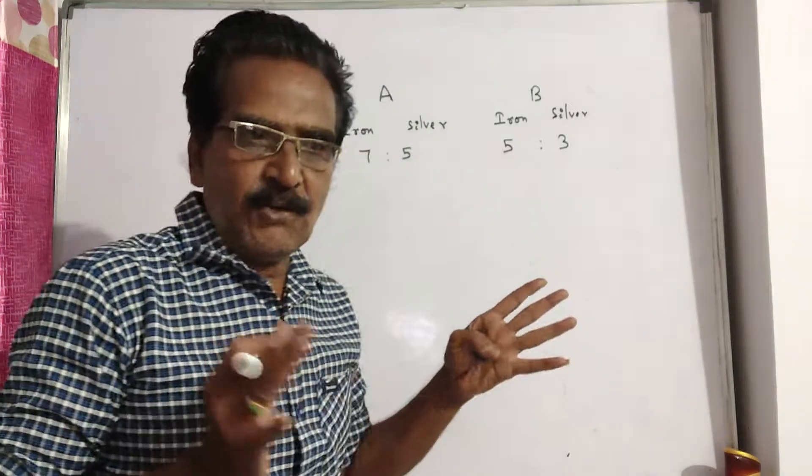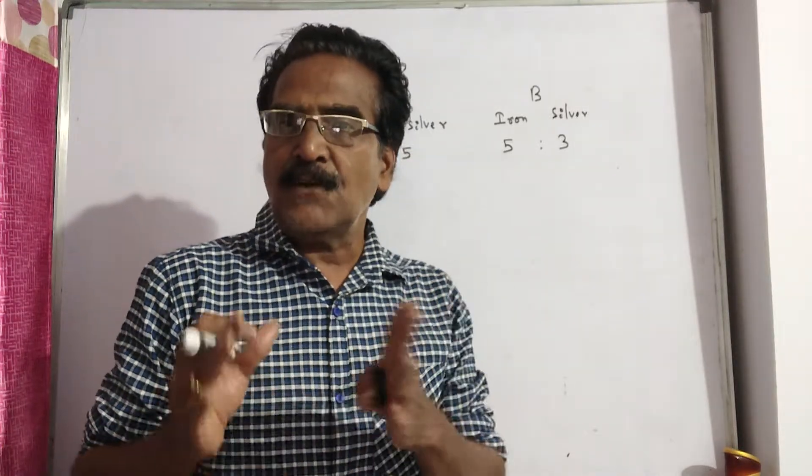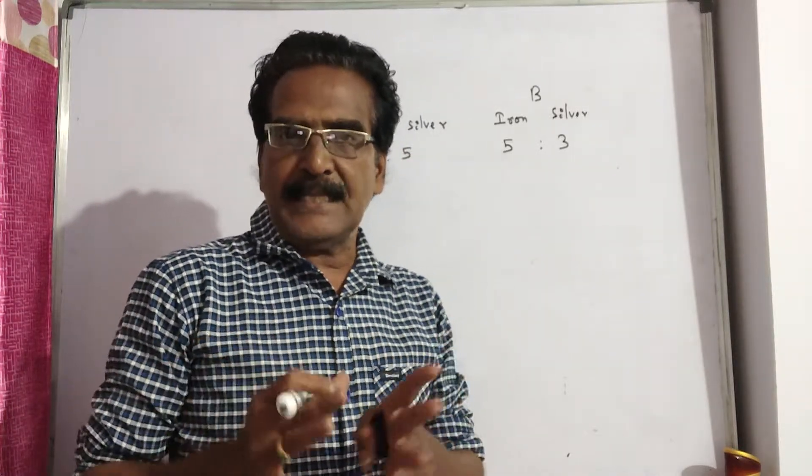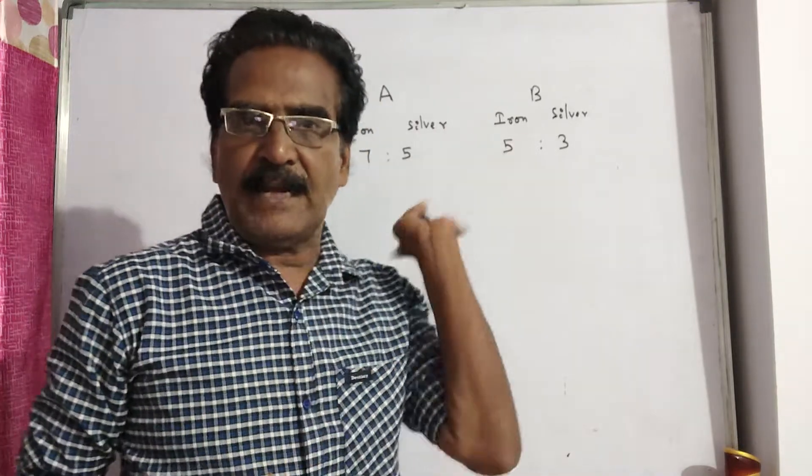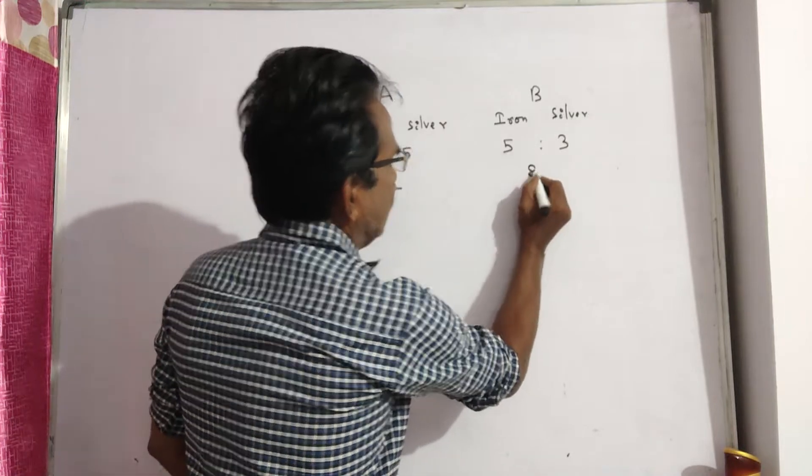Here equal quantities of alloys are taken. So first let us make the two quantities equal. See here, 7 plus 5 is 12. 5 plus 3 is 8.